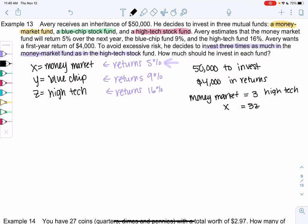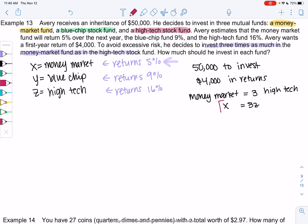We almost have a system of equations. We know that X equals 3Z. That'll be important. That's from the three times as much. And then, we also know we're going to invest $50,000. So the investments are X, Y, and Z. So we know X plus Y plus Z equals $50,000.